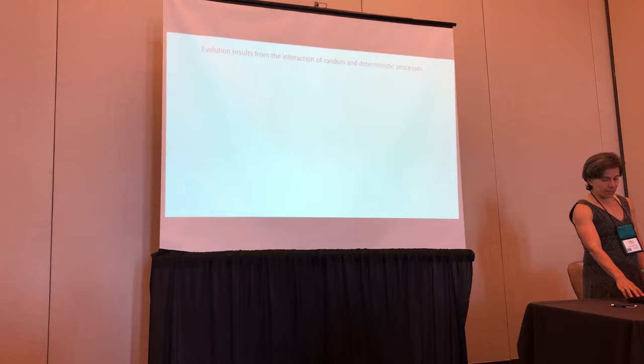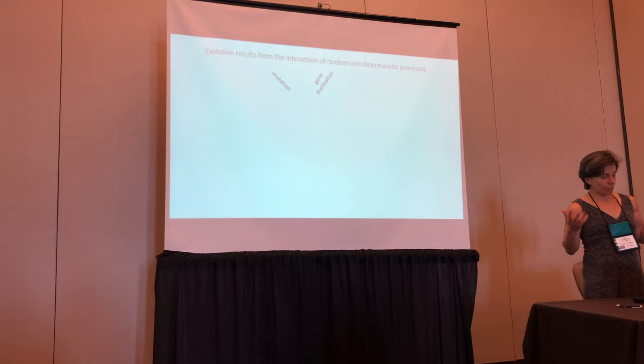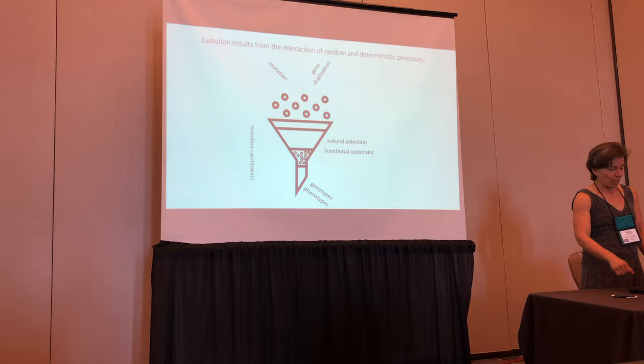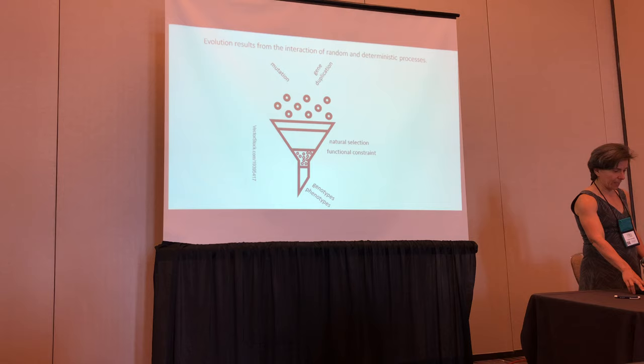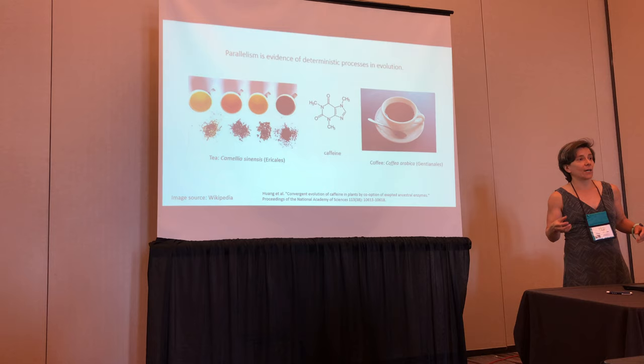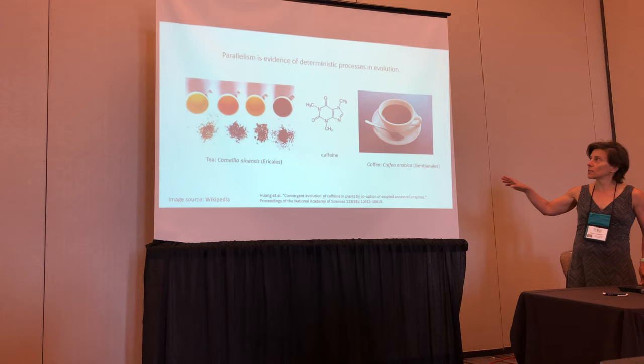Evolution results from the interaction of random processes, such as point mutation and gene duplication, which generate variation and diversity, that are then filtered and winnowed by deterministic processes, such as natural selection and functional constraint, to give us the genotypes and phenotypes that we observe. Parallelism is often very strong evidence of these deterministic processes in evolution, and we see parallelism across all kinds of traits in plants, including parallelism in the specialized metabolites that plants produce.